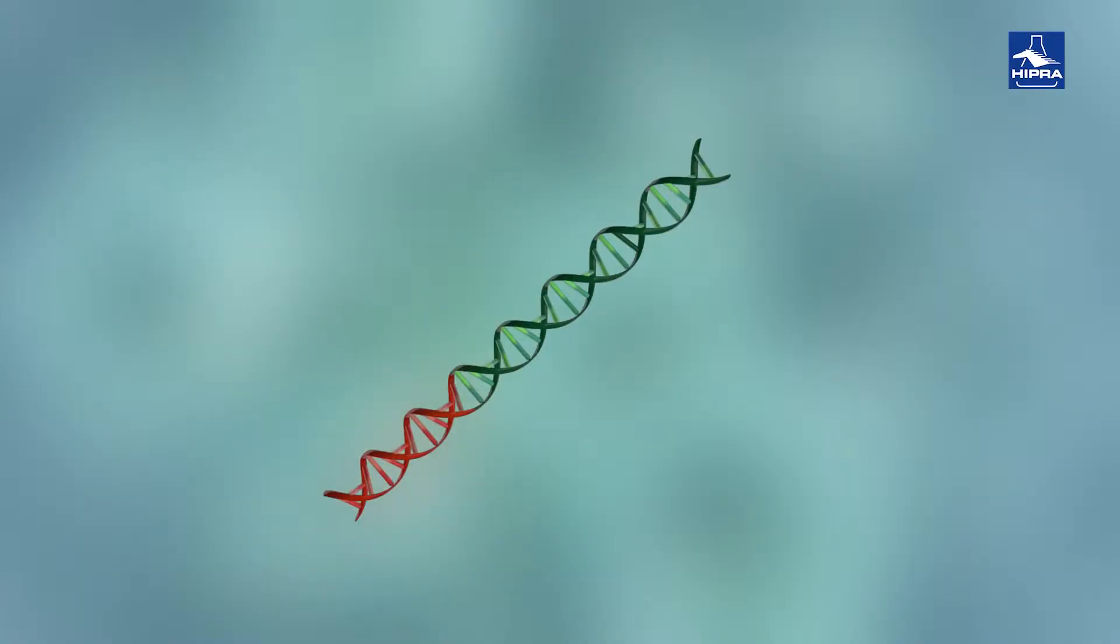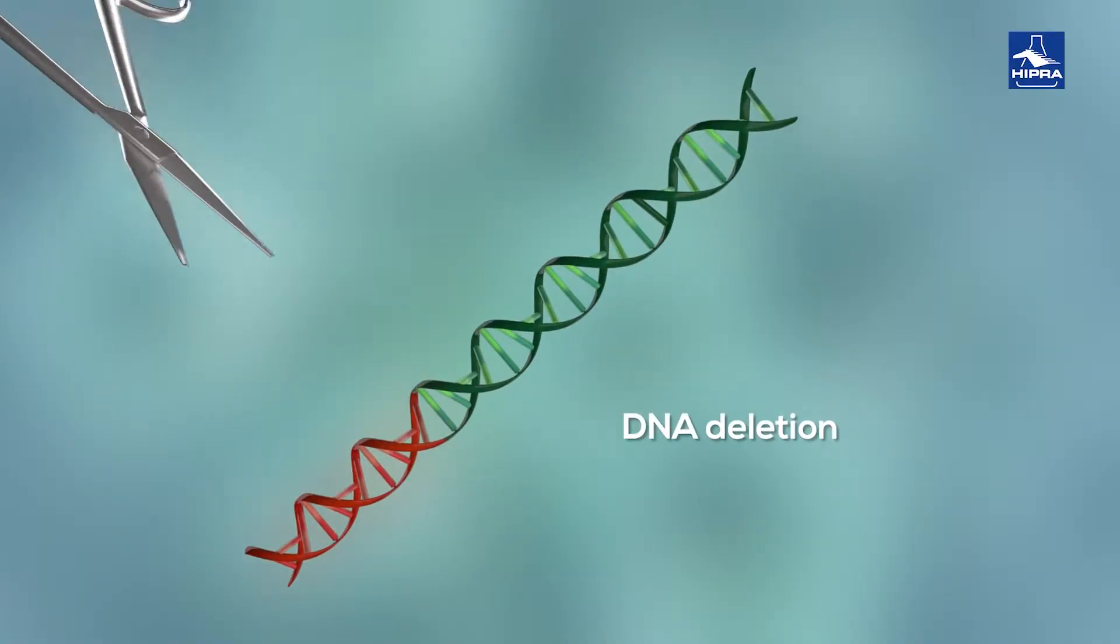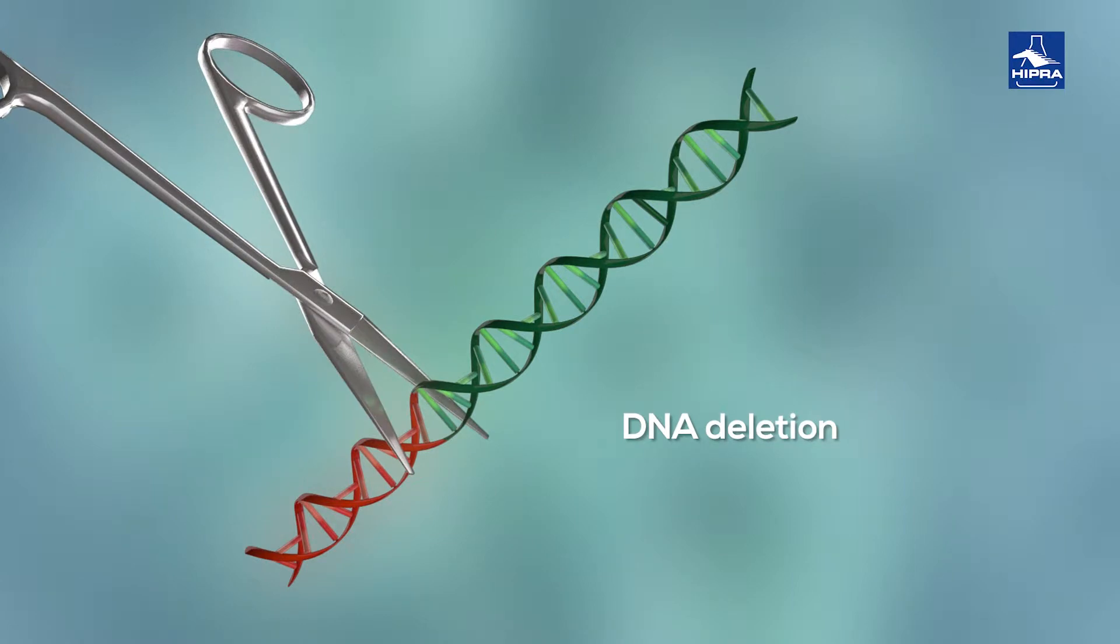In order to obtain recombinant Pasteurella multocida toxin, the first step is to eliminate the DNA fragment that encodes the toxic part of the protein.